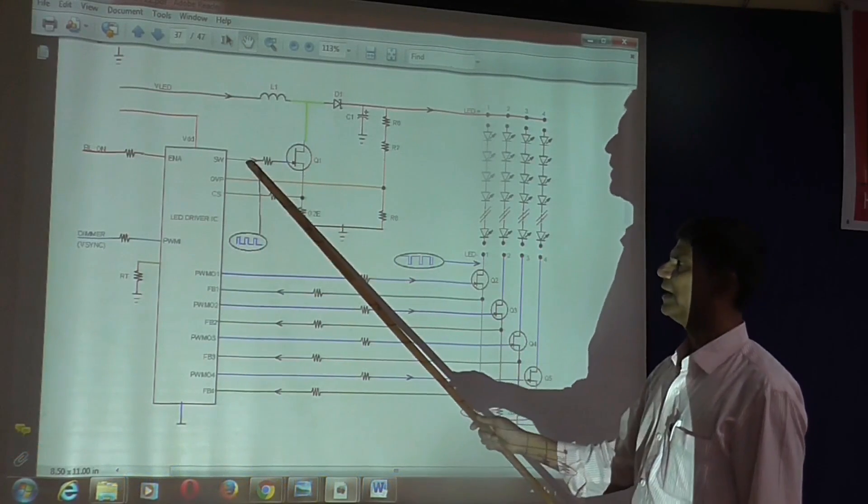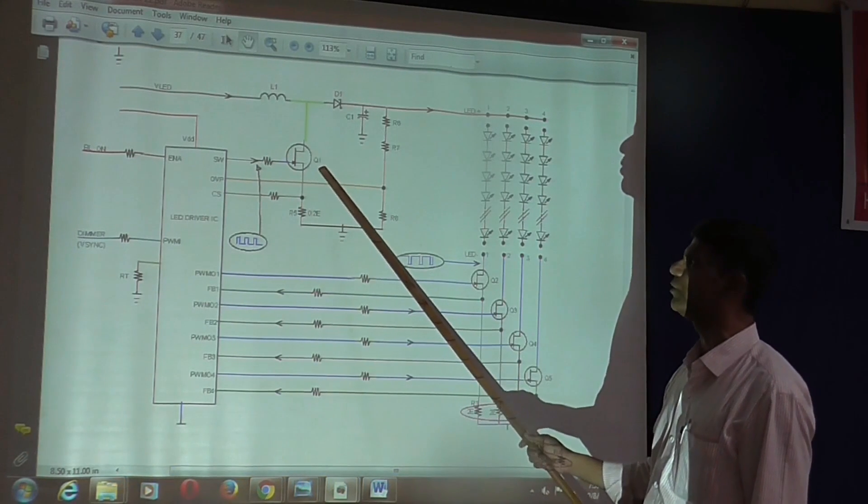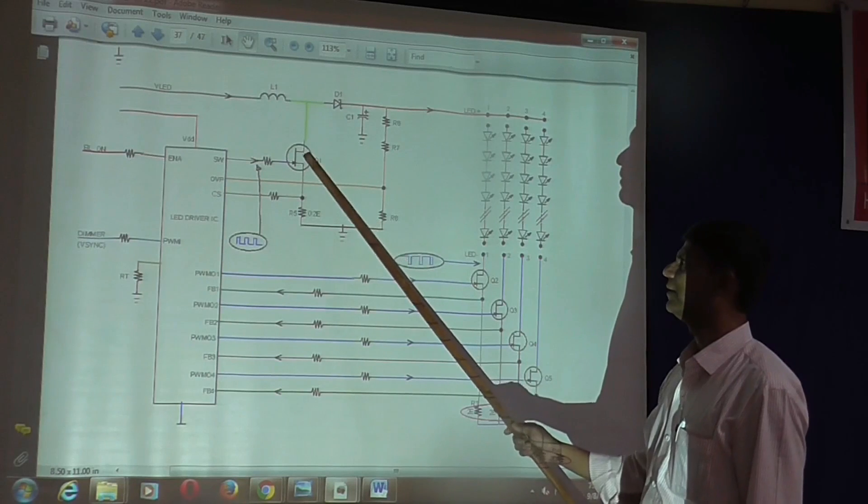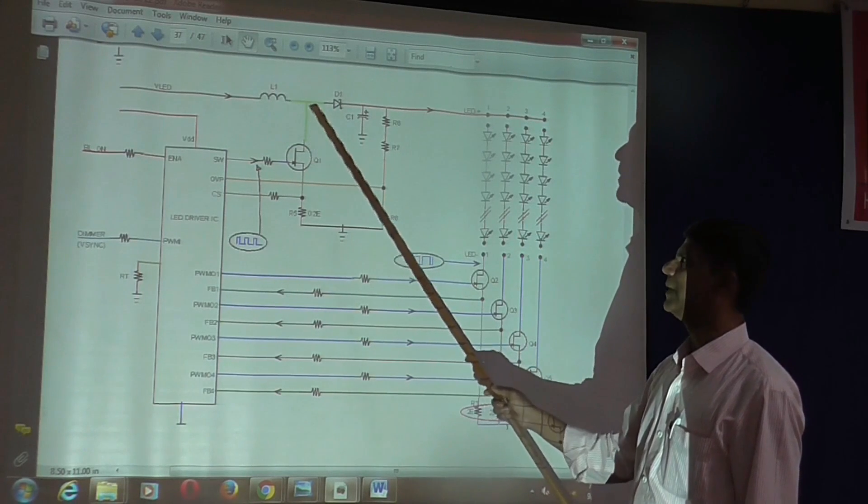Once PWM pulses appear, these are amplified by Q1 transistor, and at the drain, amplified pulses are present.